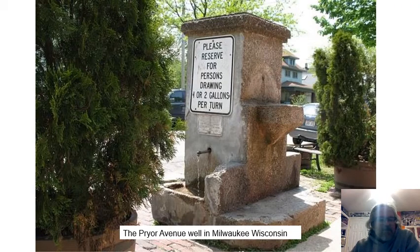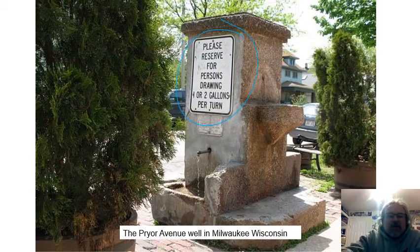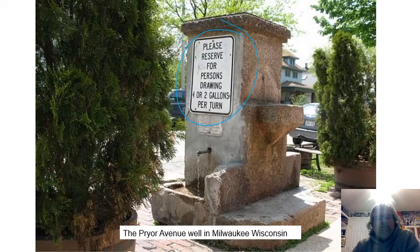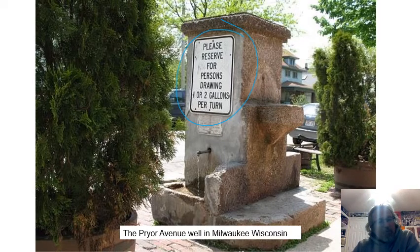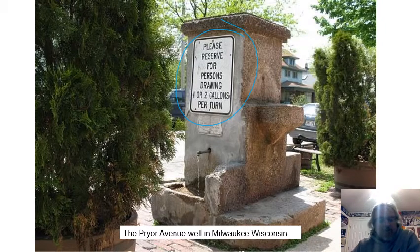Here's one still in use in Milwaukee, Wisconsin — the Prior Avenue well. A sign reads 'please reserve for persons drawing two gallons per turn.' People still go to this well, fill up containers, and take them home even though they have indoor plumbing. Some people are averse to the chemicals — chlorine, fluorine, and so on — in treated water, or they simply like the taste of natural groundwater. So some of these old wells are still around and in use.